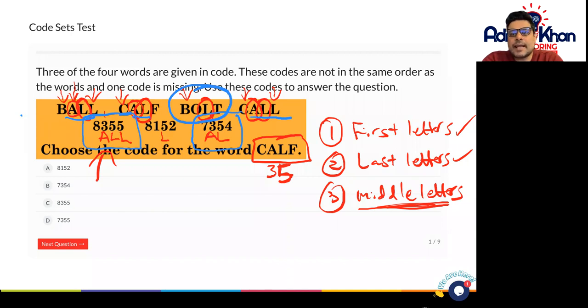So eight must stand for b. One must stand for o and two must stand for t. So bolt is the word that's slightly odd one out because it's got different letters and numbers in there as well.